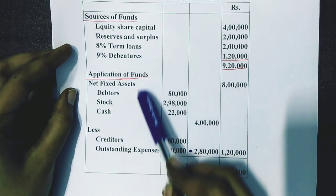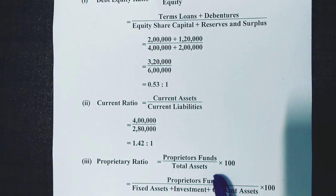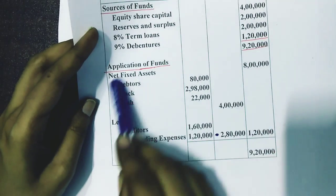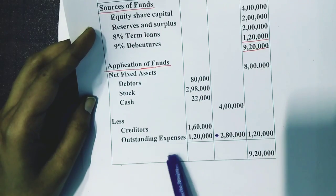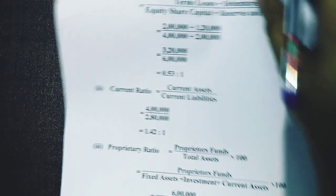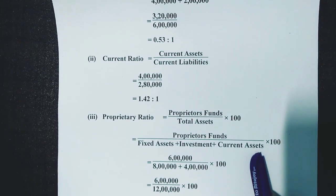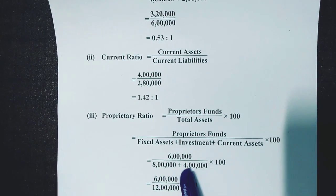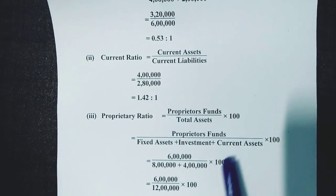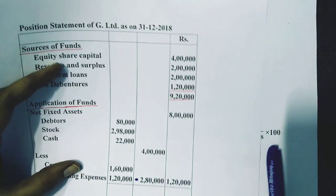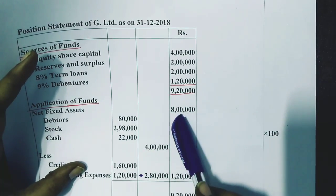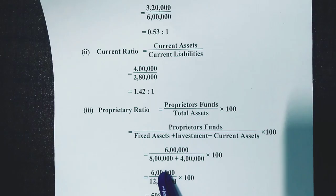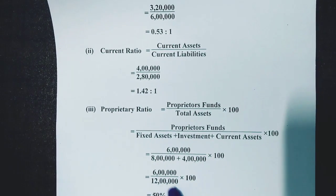A smarter way to remember: in the application of funds section, take everything listed except current liabilities. So total assets equals fixed assets plus investments plus current assets. Fixed assets are rupees 8 lakhs, investments are not given, and current assets are rupees 4 lakhs — total 12 lakhs. So 6 lakhs divided by 12 lakhs into 100 equals 50 percent.